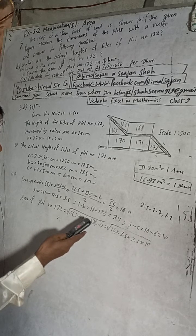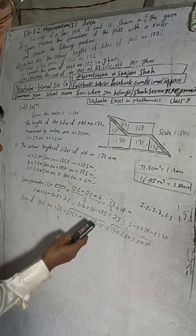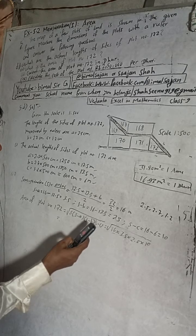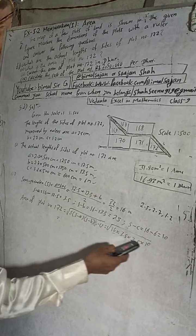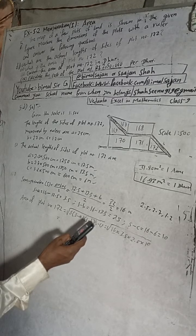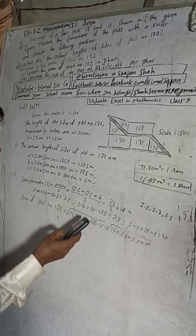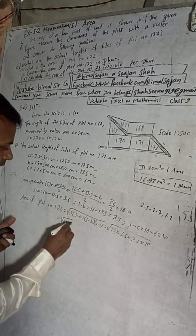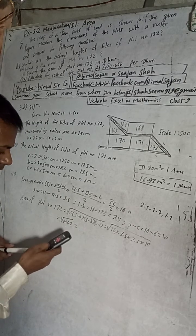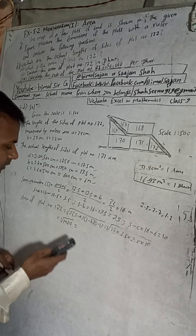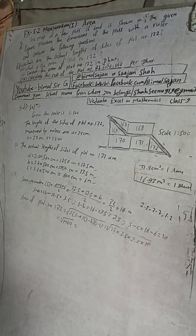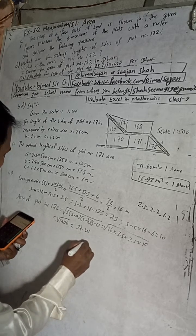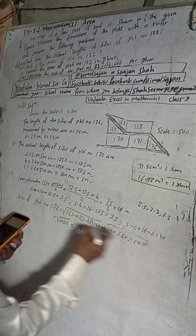This works out to root under 1400. I will pause the video to calculate the root. Root of 1400 is approximately 37.4165. So the area of the plot is 37.4165 square meters.